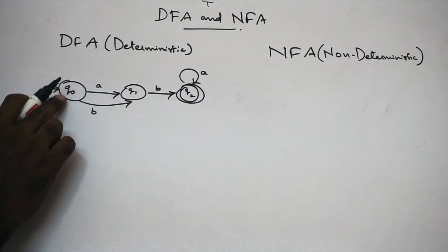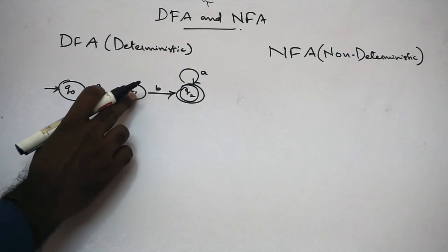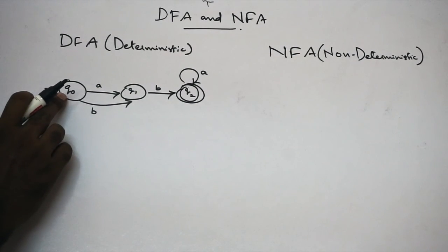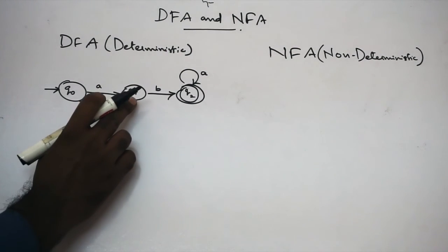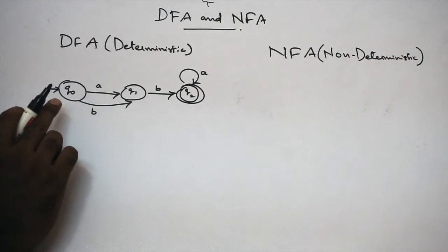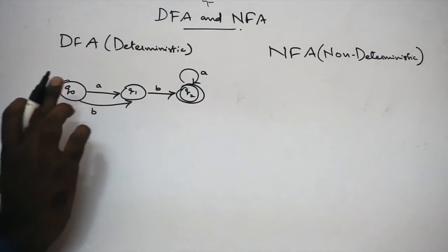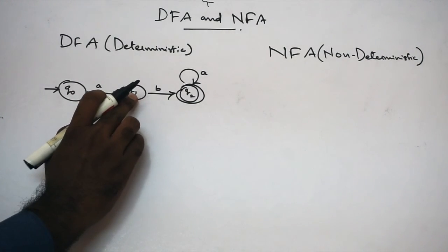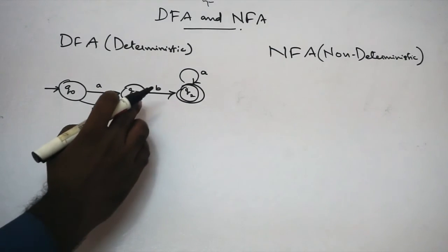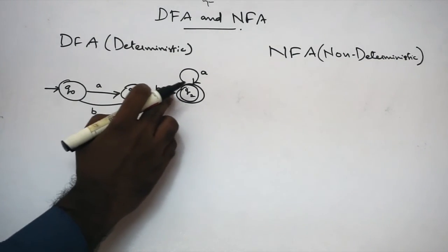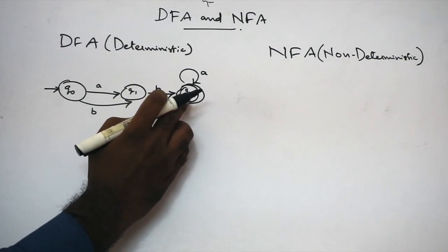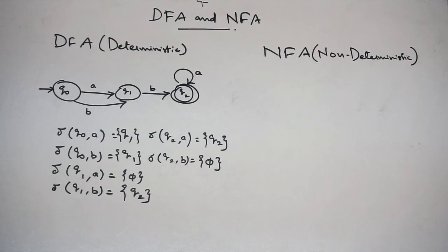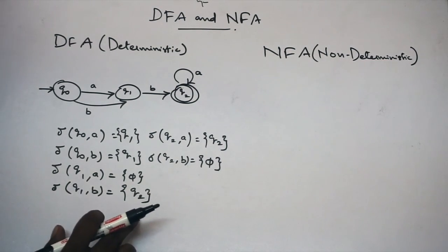Q0 on A gives Q1. Q0 on B gives Q1. Next, Q1 on A — in the state — next Q1 on B gives Q2.